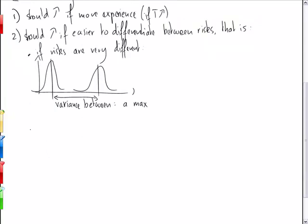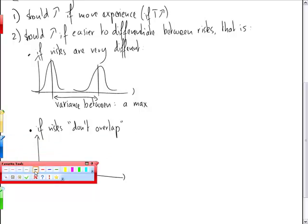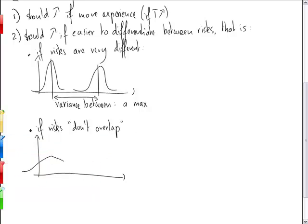Now it's also easier to differentiate if the risks don't overlap. So look at the following situation. If you have distributions that are more or less centered at the same place, but they are less peaked. You have two distributions like that. So this is the variance of the distributions themselves.